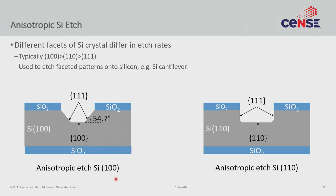The shape you get depends strongly on both the material properties and the orientation. For a silicon (110) wafer, you do not get a trapezoidal profile — you actually get a completely vertical sidewall, since the exposed facets are (111) planes oriented vertically. This is very hard to achieve in general etching but is obtained here simply due to crystal anisotropy, making it very useful for microfluidic applications.